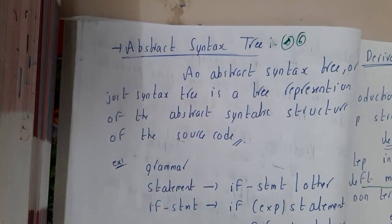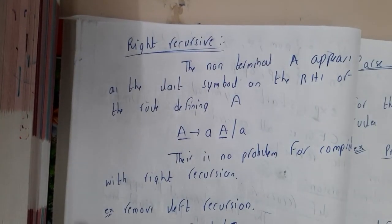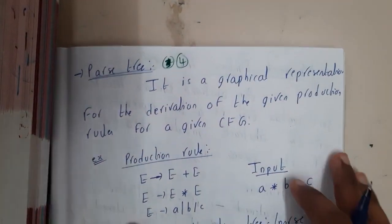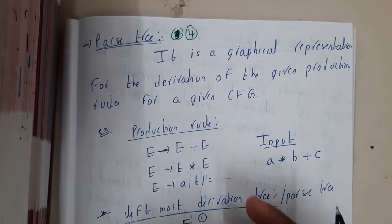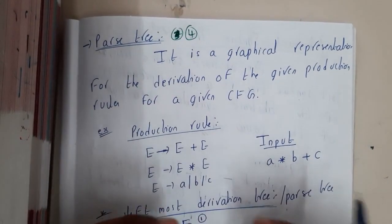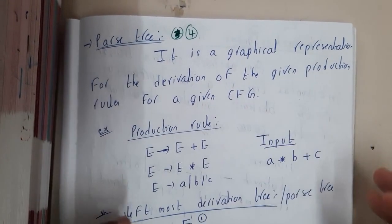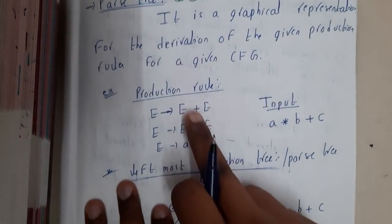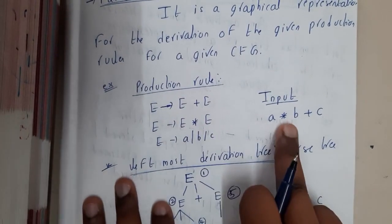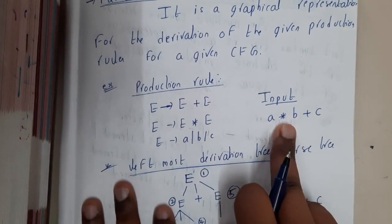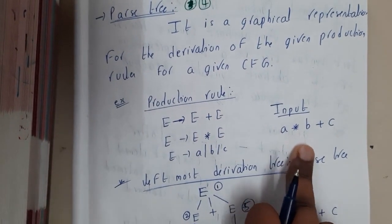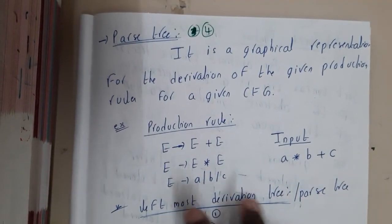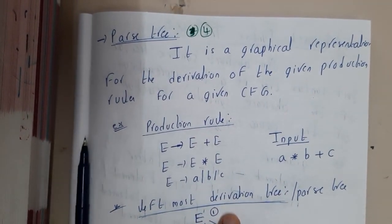So now we are done with leftmost derivation and rightmost derivation. I hope everyone has a clear idea on this. In the next lecture we will be discussing about parse trees — how you can construct a parse tree for a given grammar with a particular input. Let us meet in the next lecture. Thank you, thanks for watching.